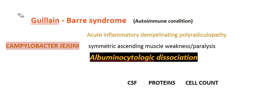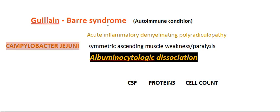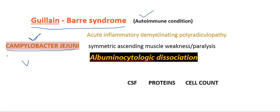Hi friends, today I am going to discuss a little bit about Guillain-Barré syndrome. Guillain-Barré syndrome is an autoimmune condition. Generally, about 70% of patients with Guillain-Barré syndrome are associated with a previous infection, most commonly with Campylobacter jejuni or some viral infections. Some immunity produced against these infections, whether bacterial or viral, leads to the condition.